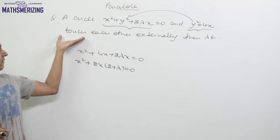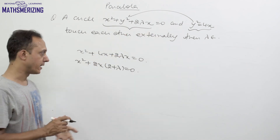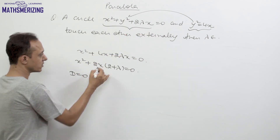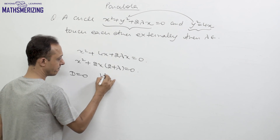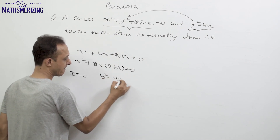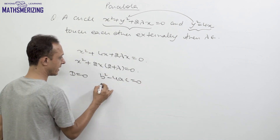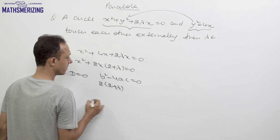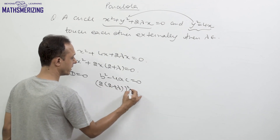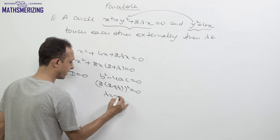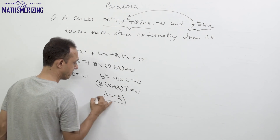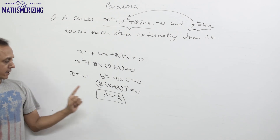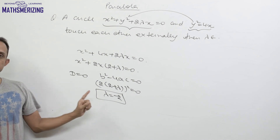This quadratic should have only one root for tangency, so D = 0. Setting b² − 4ac = 0: [2(2 + λ)]² = 0, which gives 2 + λ = 0, so λ = −2. Therefore, this circle and parabola touch each other when λ = −2.